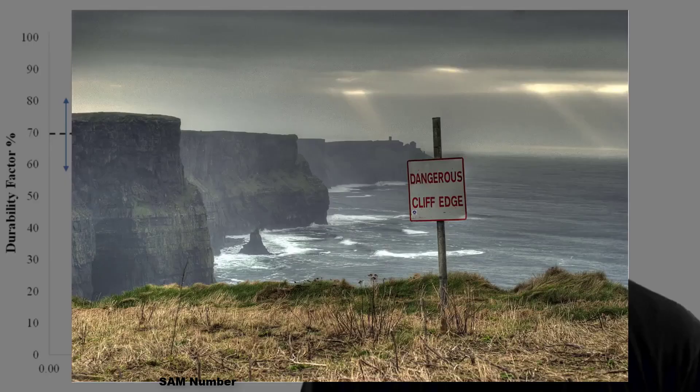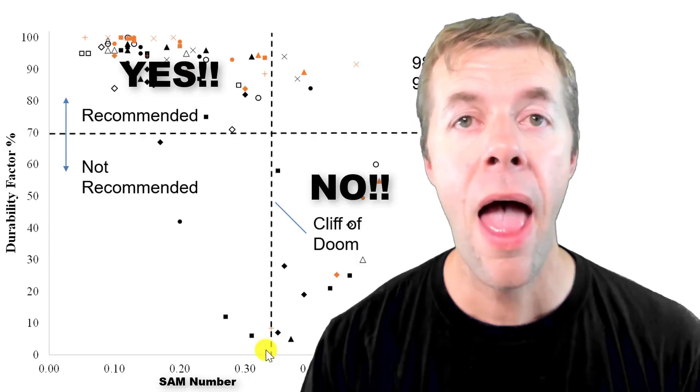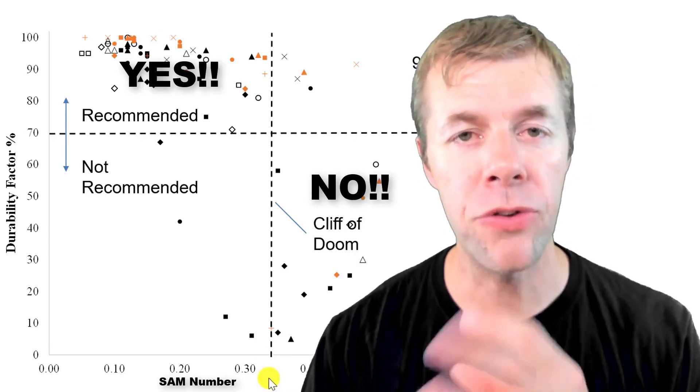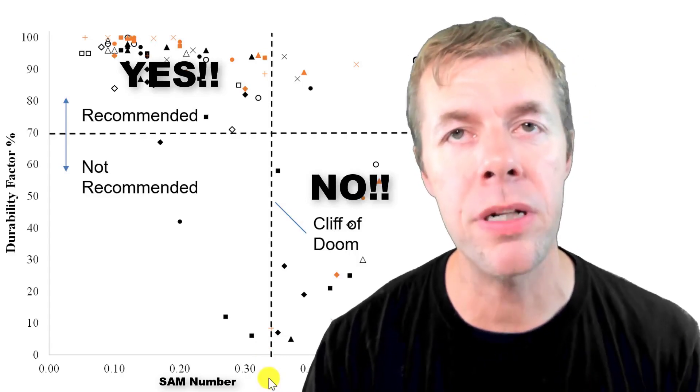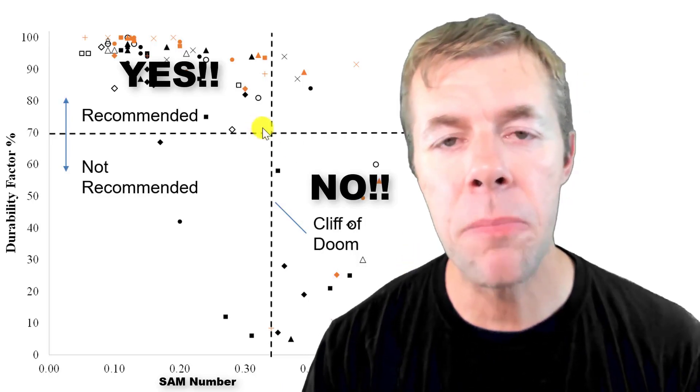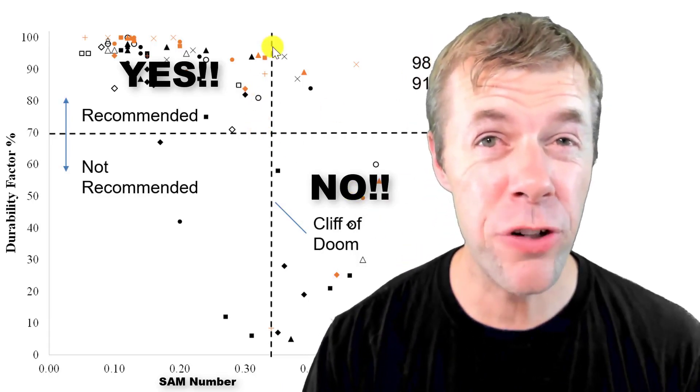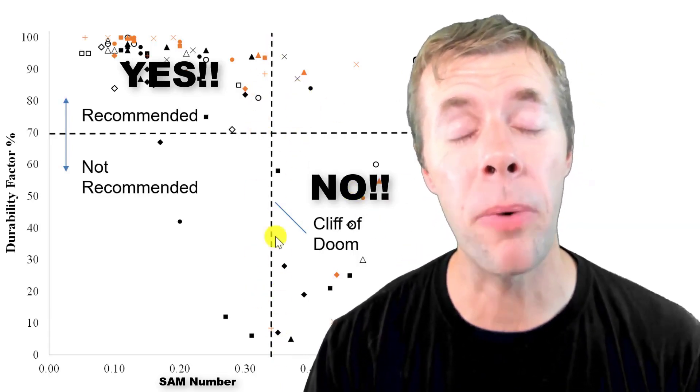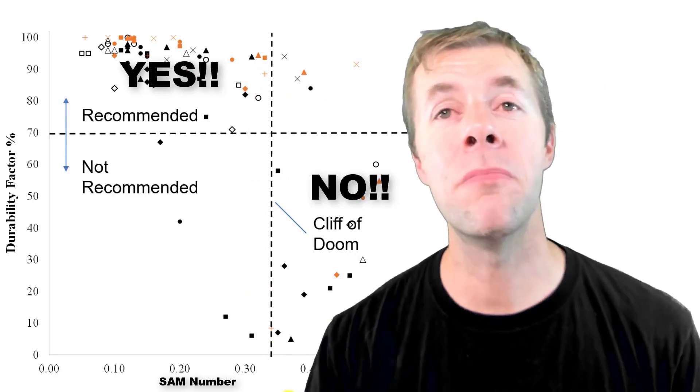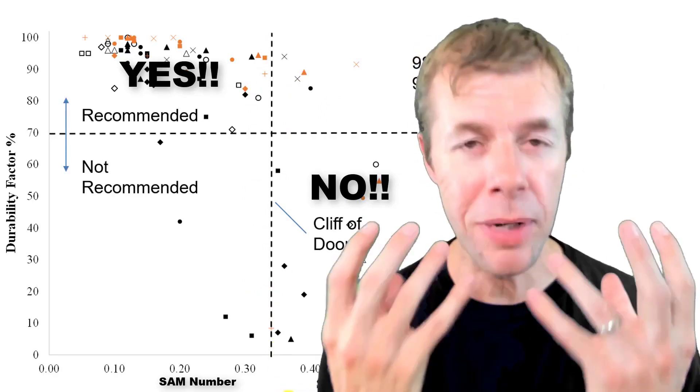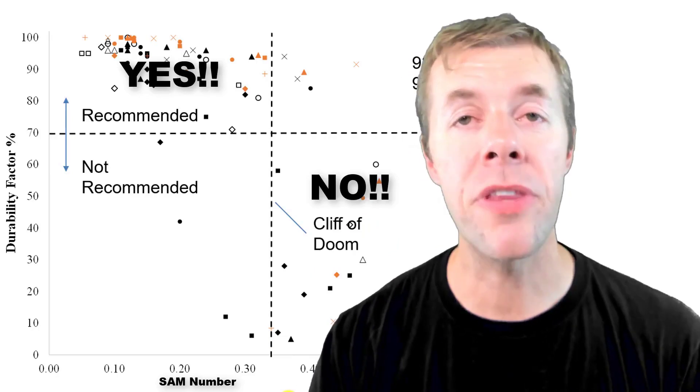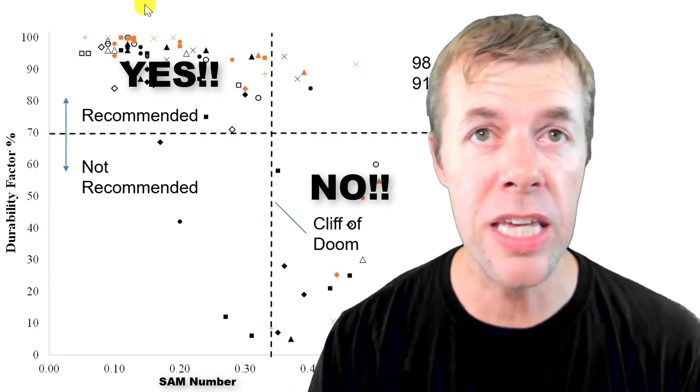Of these 98 mixtures, this cliff of doom, this 0.32 number, separates them to 91% agreement. That means it does a good enough job that 91% of the time things fall into the yes quadrant or the no quadrant. That's pretty good.